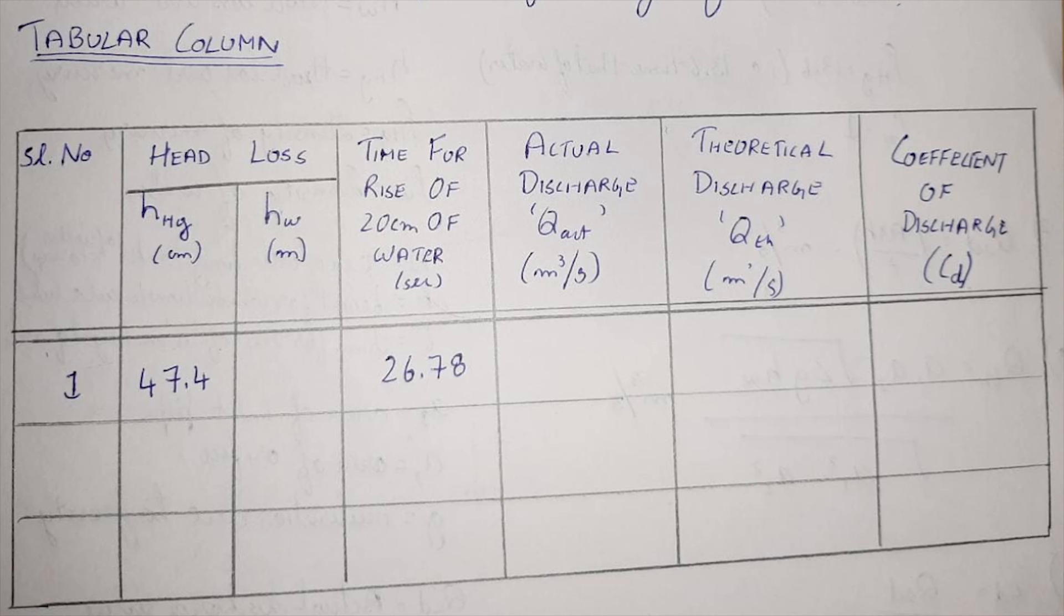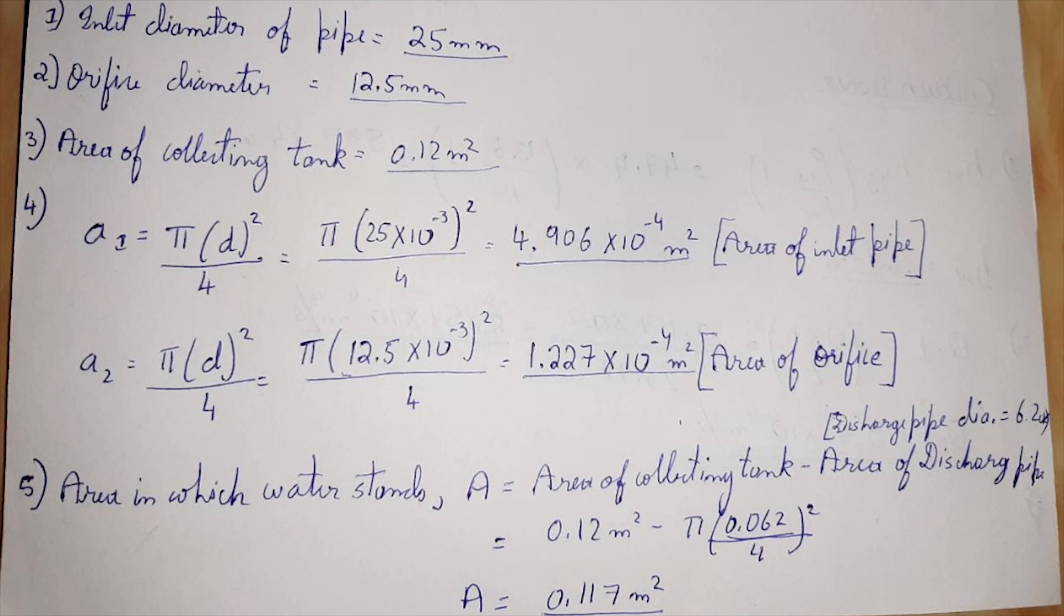The fourth column is actual discharge in units of meter cube per second. The fifth one is theoretical discharge value with units in meter cube per second. Finally, we calculate the coefficient of discharge. The observation is written.